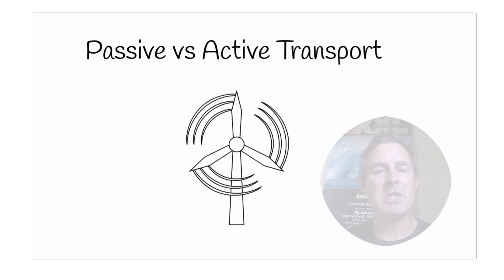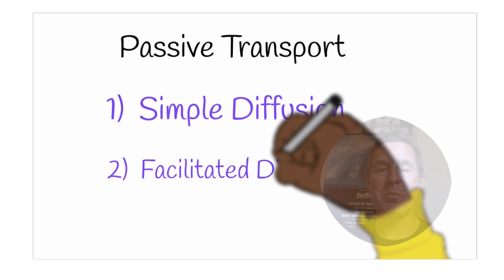Passive transport does not require energy, because whatever is moving across the cell membrane is moving down their chemical gradients, or down their concentration gradients. They are moving from an area of high concentration to an area of low concentration. Active transport, on the other hand, requires energy because it is moving things against their gradients.